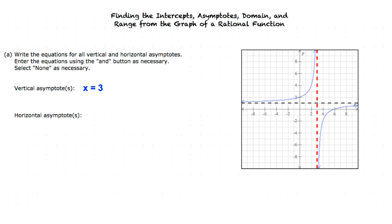Now let's find the horizontal asymptote using the same process. The graph approaches y equals 1 from both sides but never fully touches y equals 1, so y equals 1 is the horizontal asymptote.